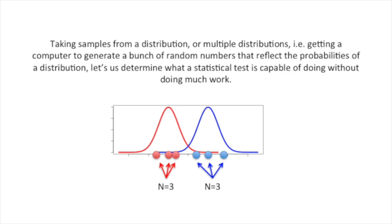Taking samples from a distribution, or multiple distributions, i.e., getting a computer to generate a bunch of random numbers that reflect the probabilities of a distribution, lets us determine what a statistical test is capable of doing without doing much real work.